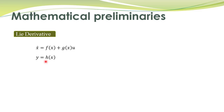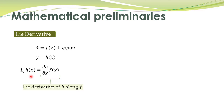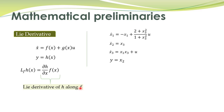For a non-linear system given by its state equations and output equations, the Lie derivative is defined by the expression: the partial derivative of h with respect to the state vector x, multiplied by f of x. This is denoted by the standard notation and is read as: the Lie derivative of h along f.